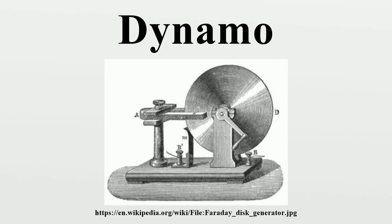Charles F. Brush assembled his first dynamo in the summer of 1876 using a horse-drawn treadmill to power it. Brush's design modified the Gramme dynamo by shaping the ring armature like a disc rather than a cylinder, and the field electromagnets were positioned on the sides of the armature disc rather than around the circumference.